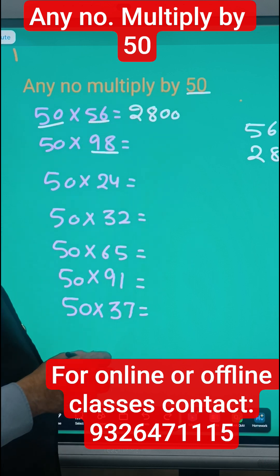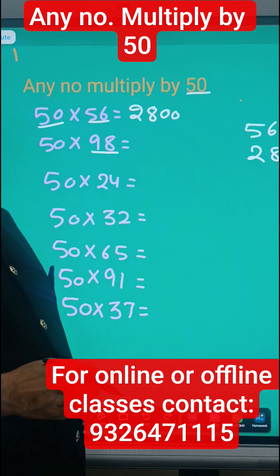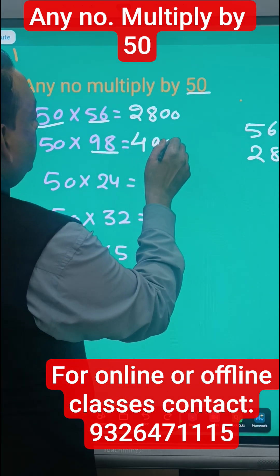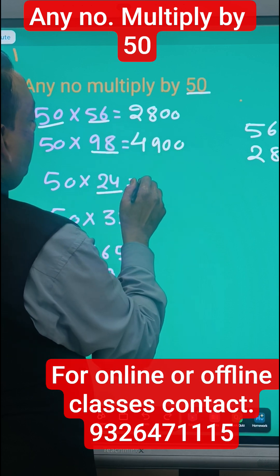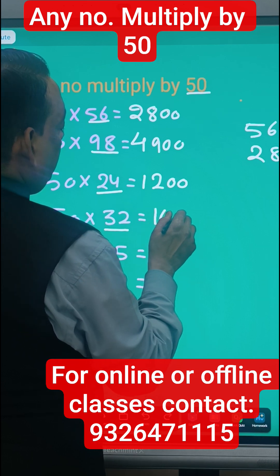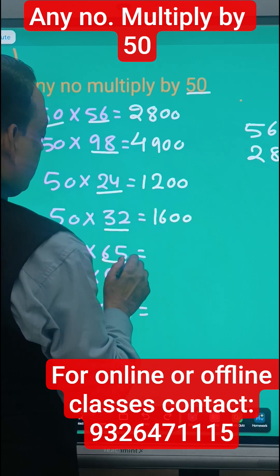So here 98 ka half is 49, so 4900. 24 ka half is 12, so 1200. 32 will be 16 and 00, so 1600. Now suppose the number is odd number.